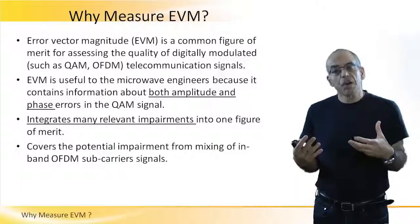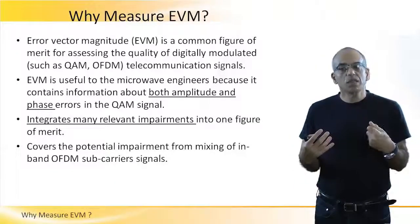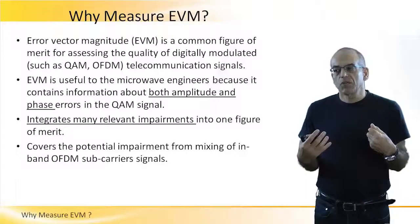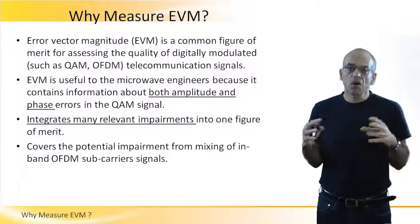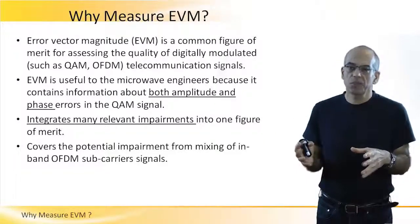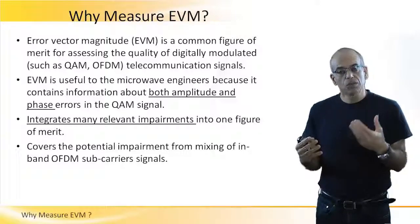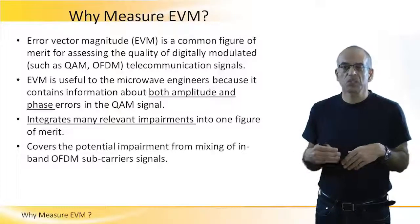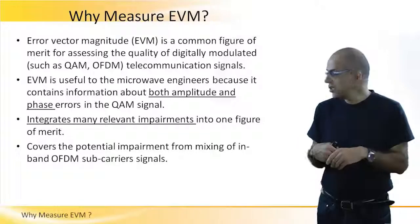All these parameters are important today. But the nice thing about EVM is that it is a very compact and inclusive way of measuring all the impairments on the constellation map — more relevant to OFDM and the new modulation schemes that came in the recent 15-20 years.